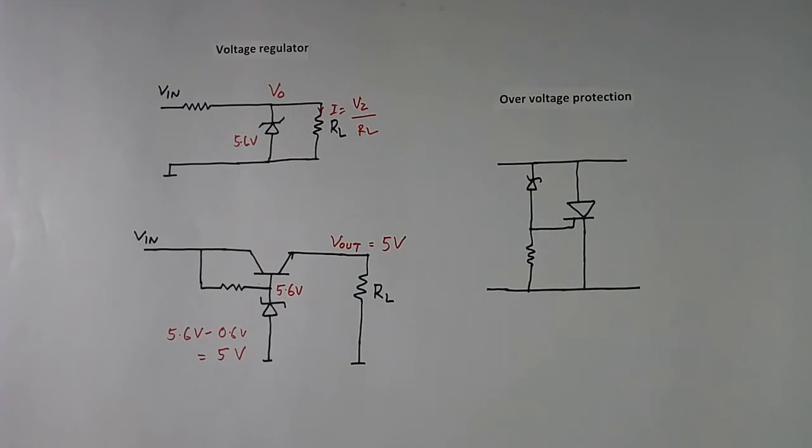When we use this kind of circuit, then load current flows like this through transistor. This is load current. And power losses across this transistor will be load current multiply by drop across transistor CE.